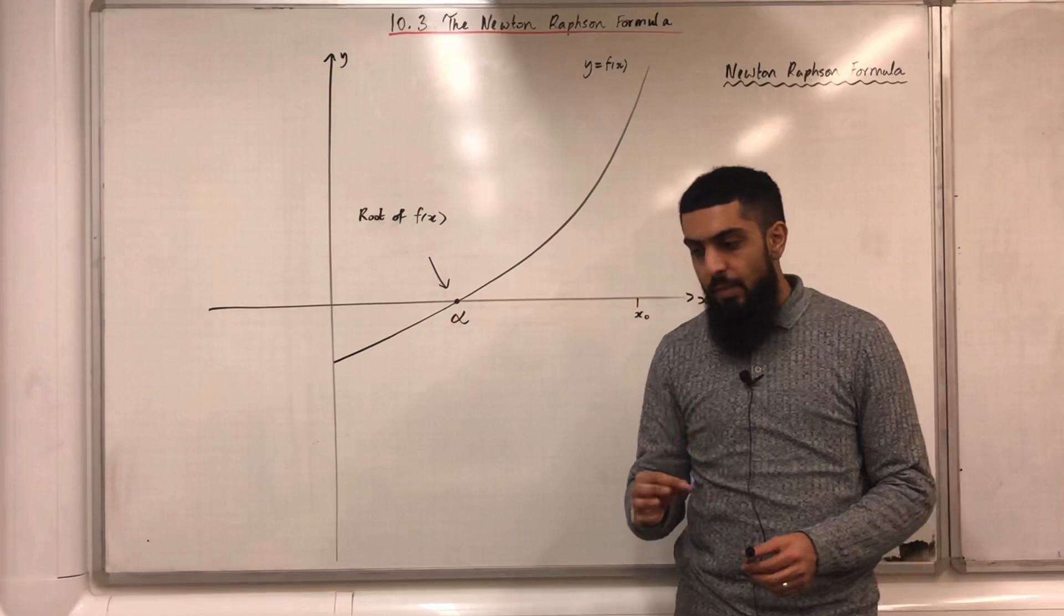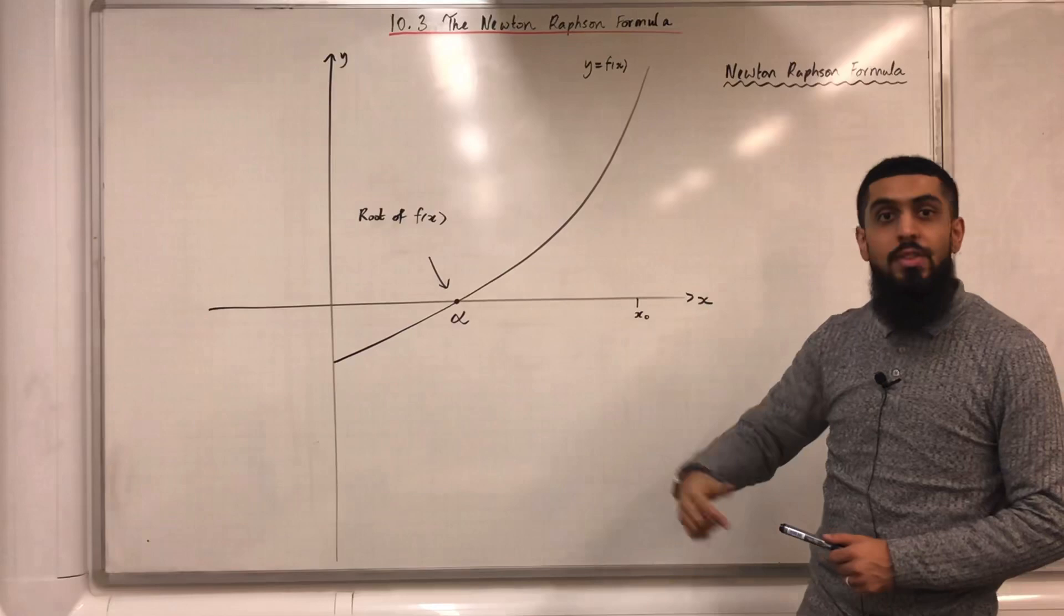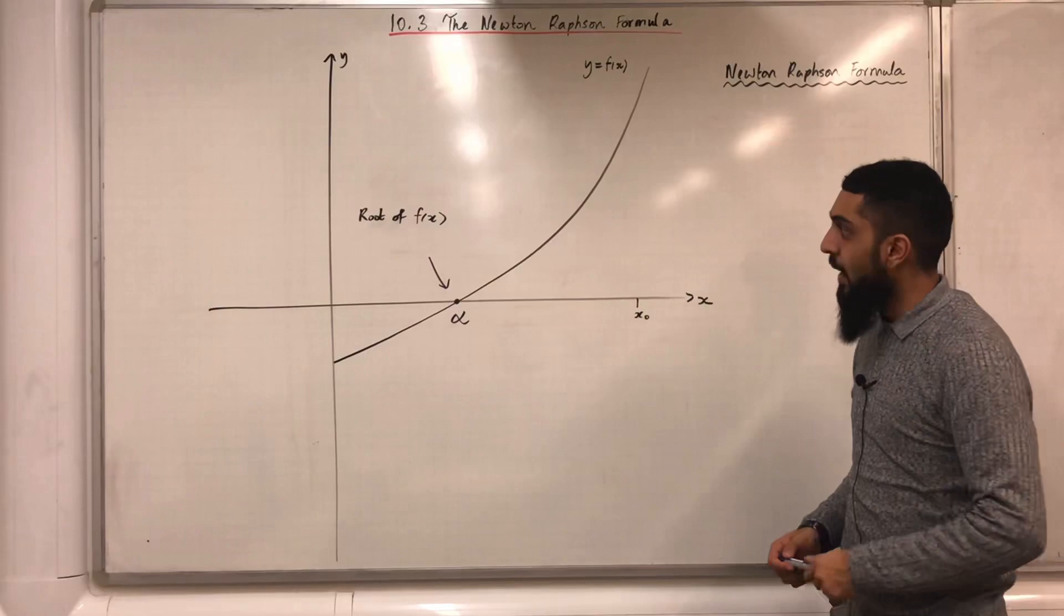Approximating the roots of f(x). There's one technique that I've covered and that technique is called iteration. We start off with an iteration formula. We use that formula to generate x1, x2, x3 and so on until we get close to the root of f(x). There's another technique that we can use to approximate the roots of f(x).